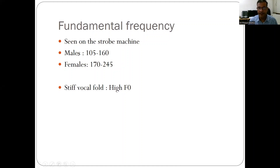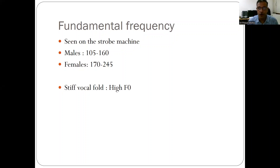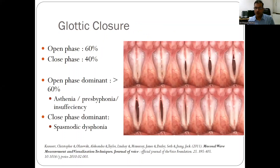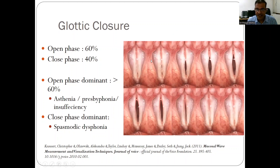The fundamental frequency is noted the moment you connect the strobe machine. In males, the fundamental frequency is around 100–150 Hz; in females it is 170–245 Hz. When the vocal cords become stiff, even males can show a higher fundamental frequency. The fundamental frequency should be noted in all stroboscopy patients. Regarding glottic closure: 60% of the time the vocal folds remain in the open phase, and 40% of the time in the closed phase — we must analyze multiple frames to give a report.